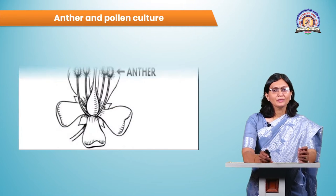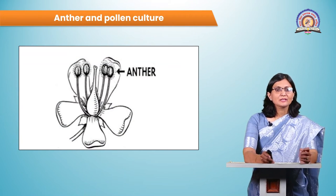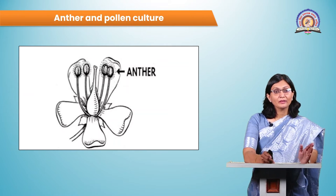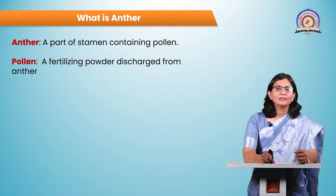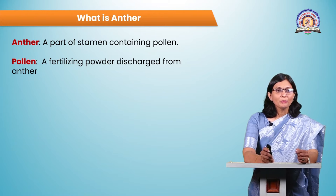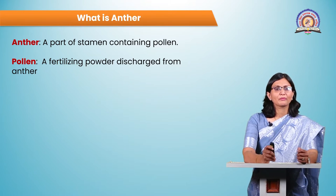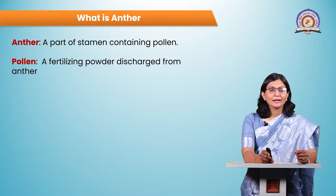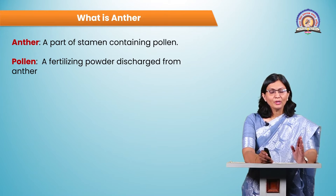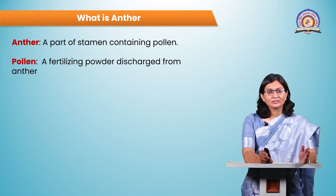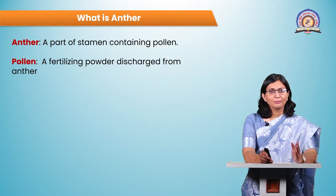Let's see anther and pollen culture in detail. Anthers are present in flowers of all angiosperms — the flower-bearing plants. The anther is the part of the stamen which contains the pollen, and male gametophytes are developed inside the anther. Pollen is the fertilizing powder discharged from the anther; it is also called a microspore and is considered the male gametophyte.